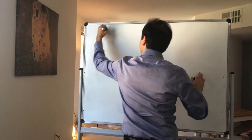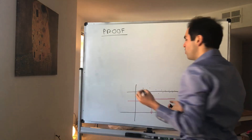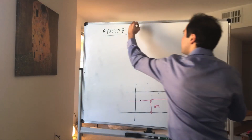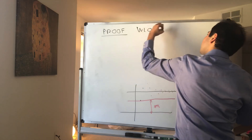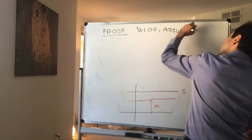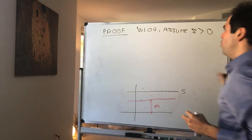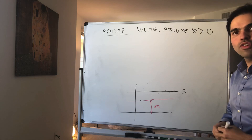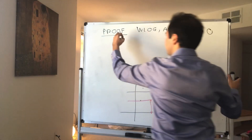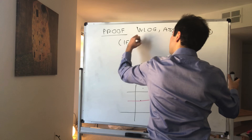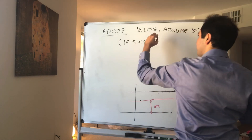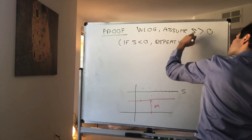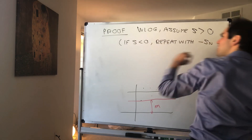Proof. First of all, without loss of generality, assume that the limit s is positive. Why can we do that? Since s is non-zero, it's either positive or negative. And if s is negative, just repeat the proof with minus S_n instead of S_n.